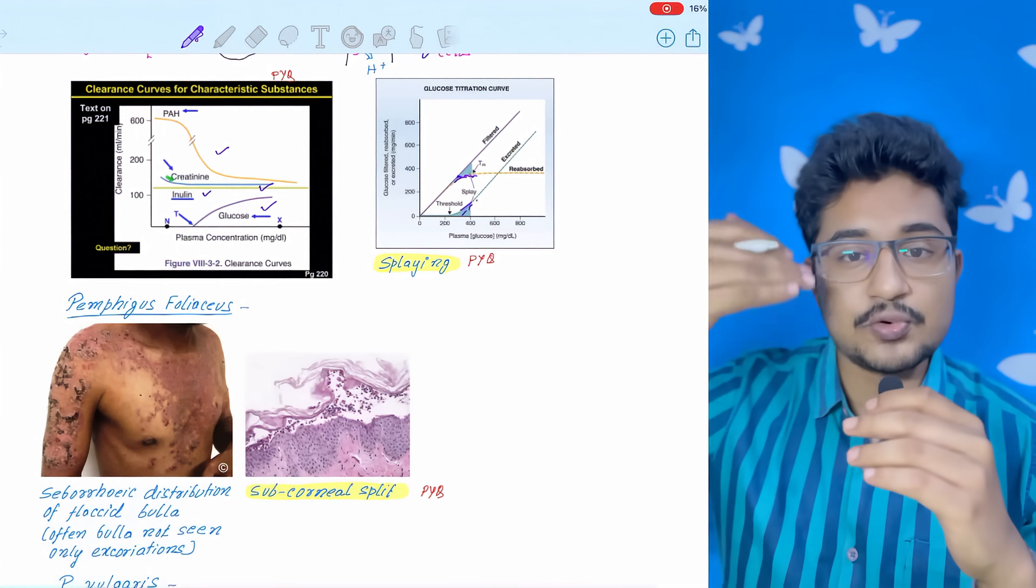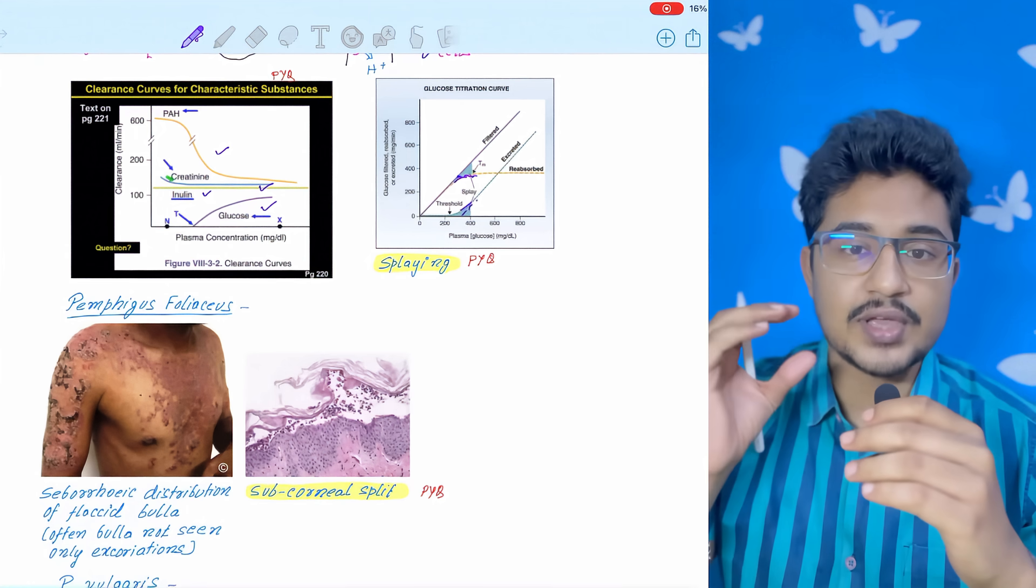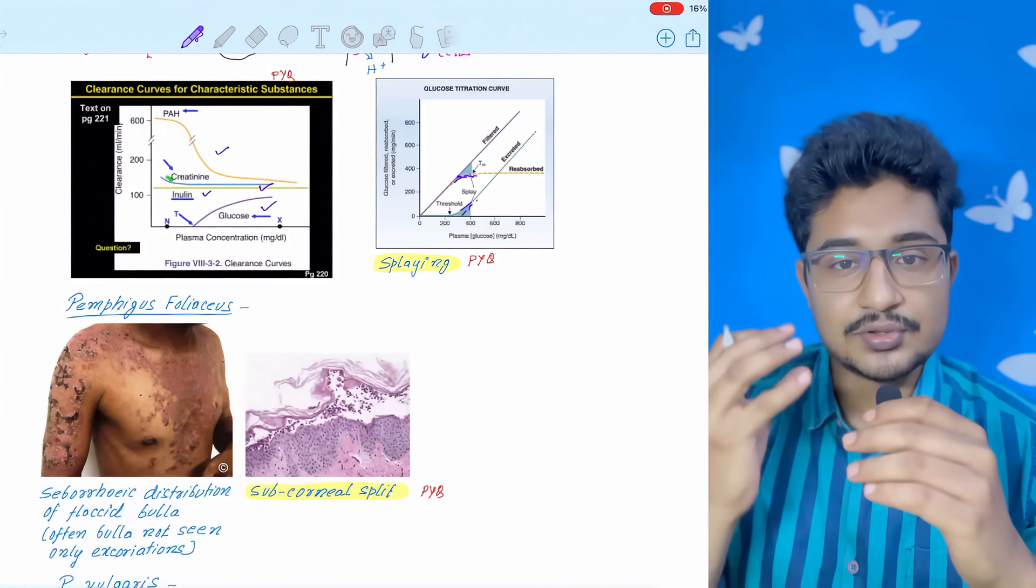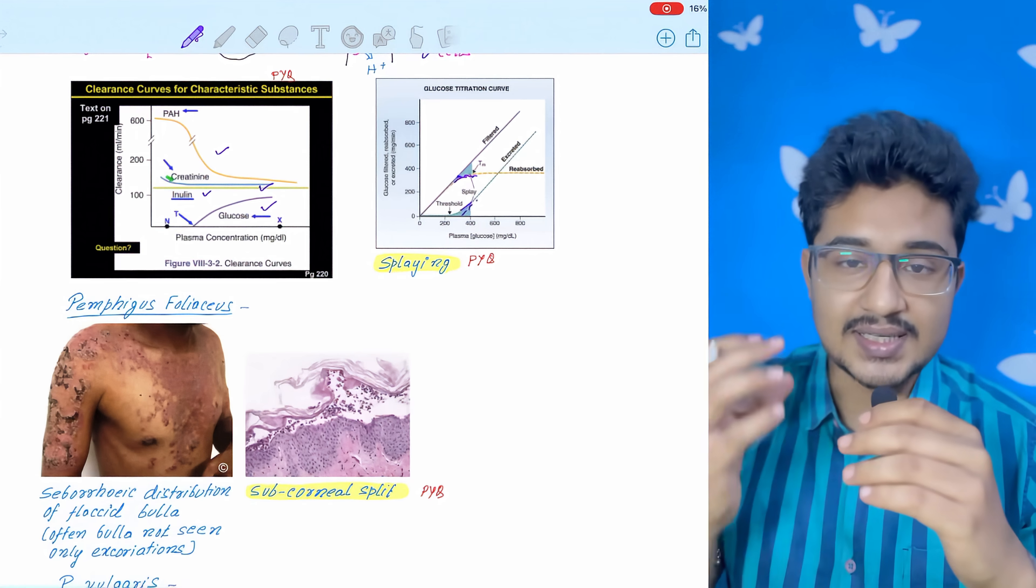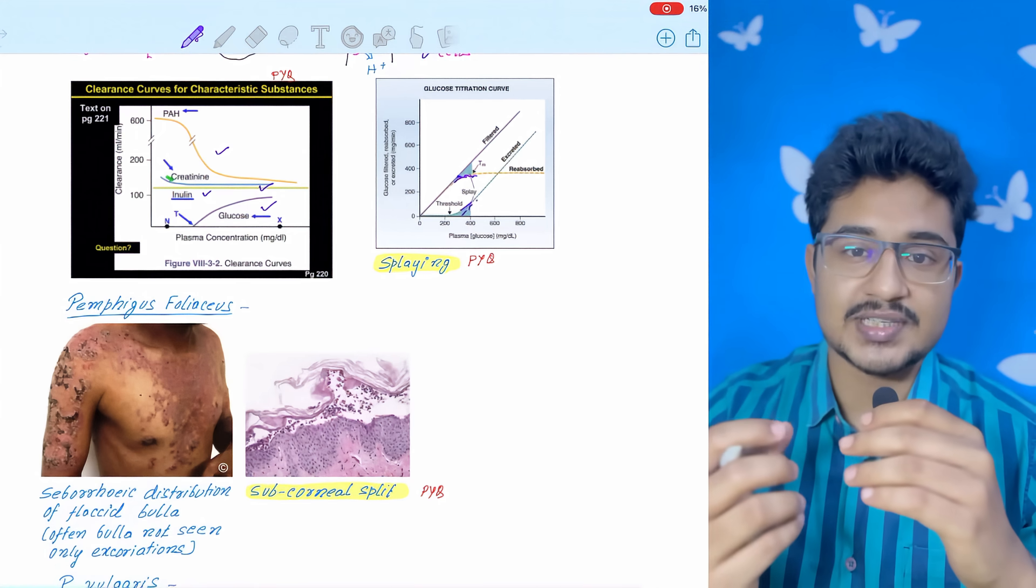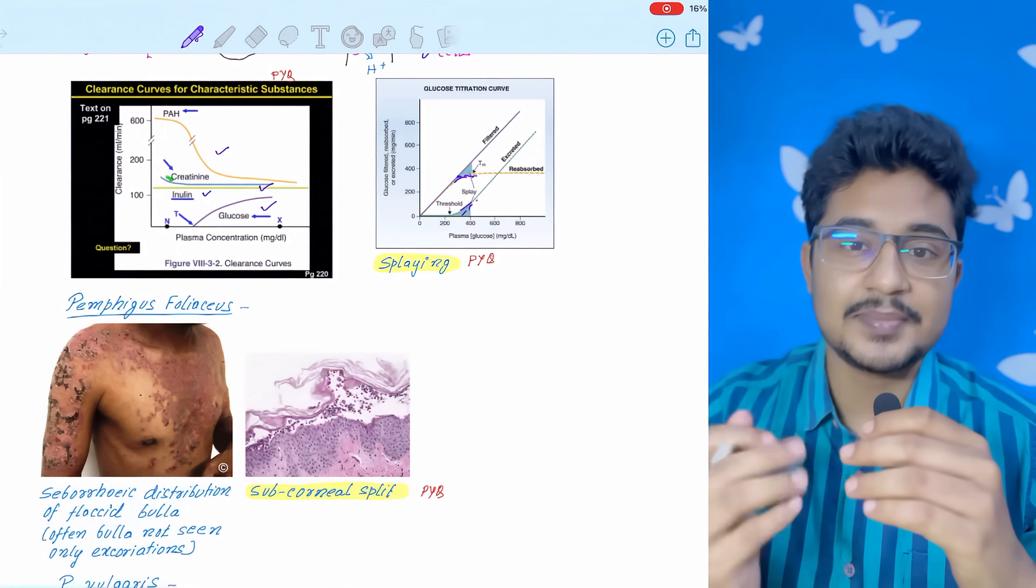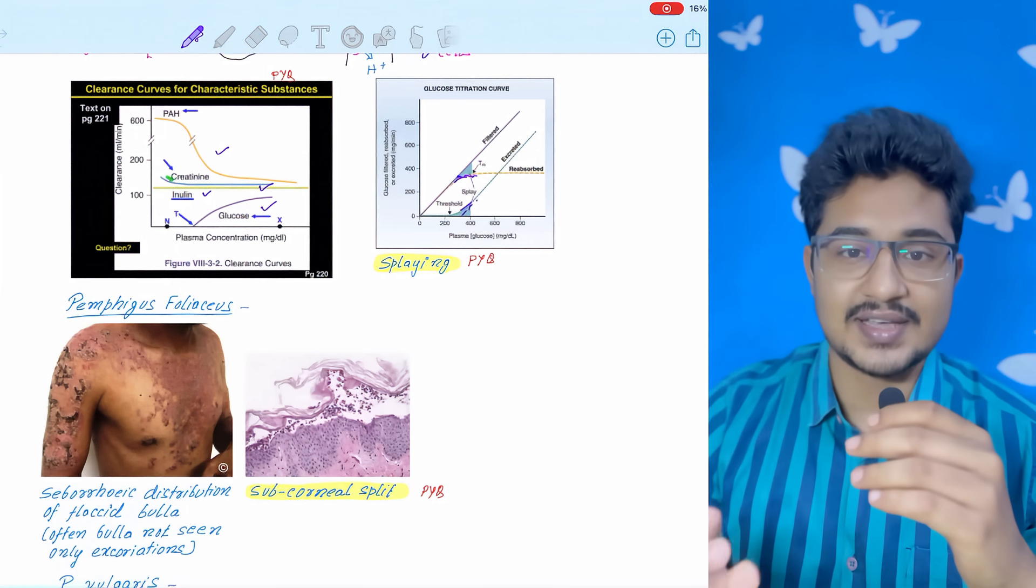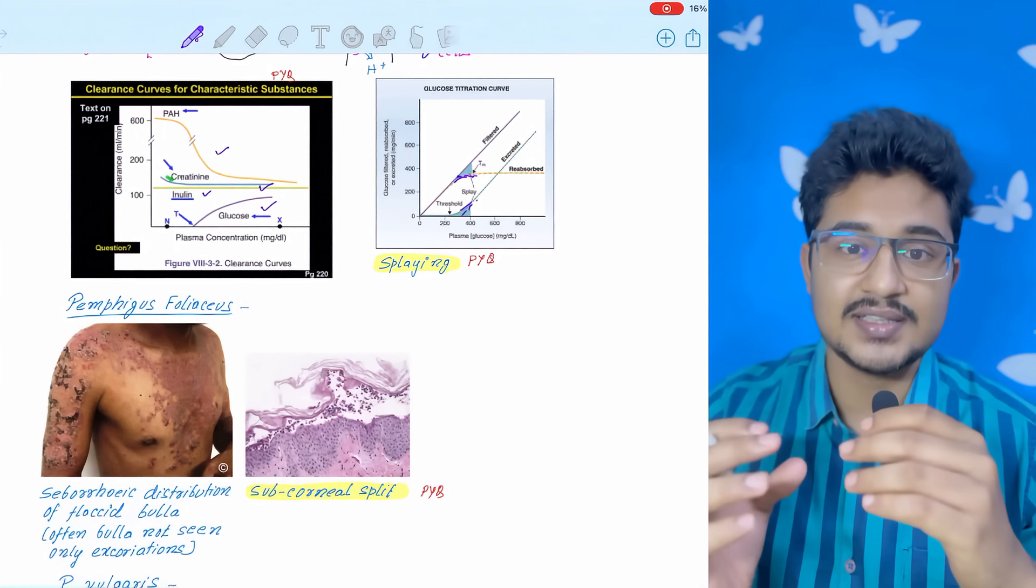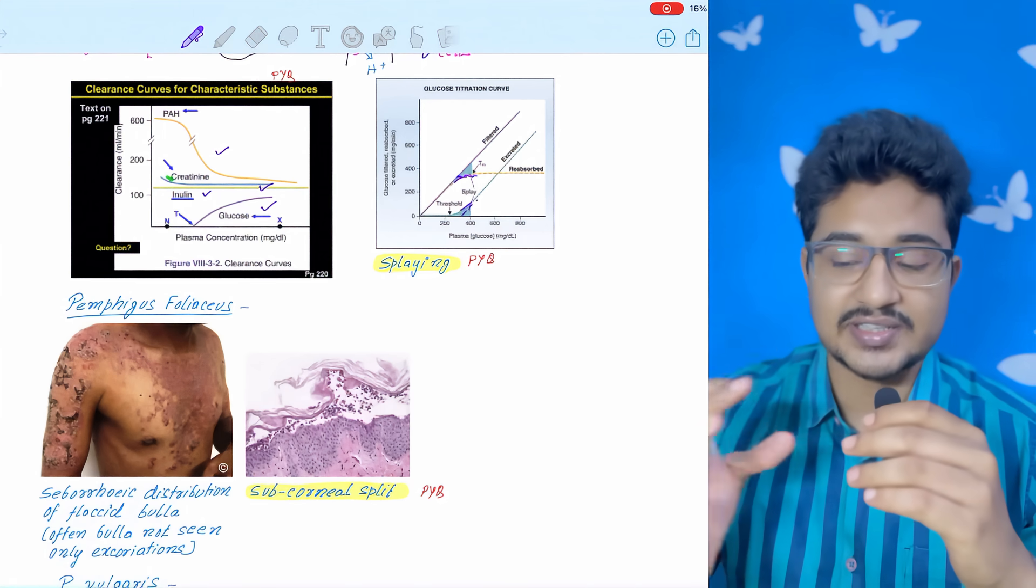So intraepidermal means flaccid. Imagine a balloon. If you are half full then it will be flaccid. If you are full then it is the pemphigoid group. In the pemphigoid group there is a tense blister, but you can't tell just by feeling it. So how do you know which is tense and which is flaccid? For that you have to see the shining appearance. If it is shiny then it is tense, because in a balloon also, if it is tense it is shiny.